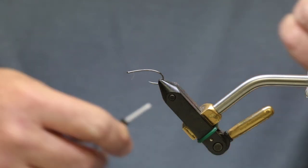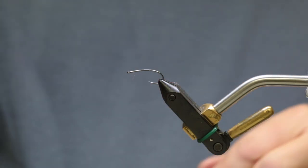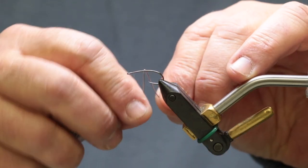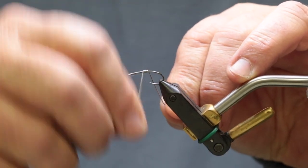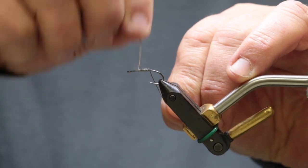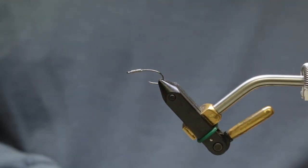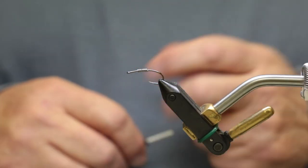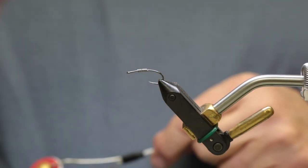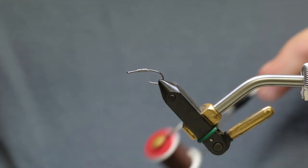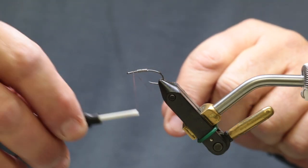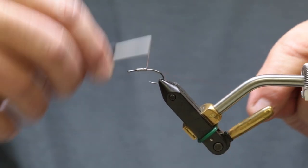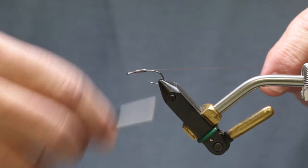We're going to use a dark brown thread and we're going to use 0.020 lead and we'll do about 10 wraps. We want it about two-thirds up. You want to have a little room up front so you can tie your legs. You don't want a big bulge, so we'll secure that.